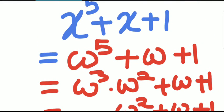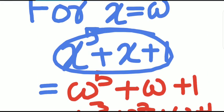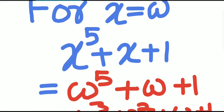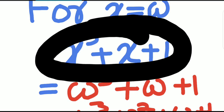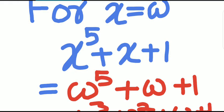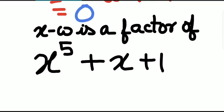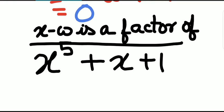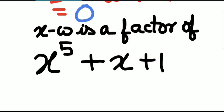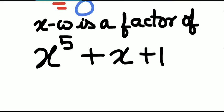So we see that x minus ω is a factor of this expression. Now, x minus ω is a factor. But what about other factors? We think that x minus ω squared is also a factor, since the complex roots occur in conjugate pairs — the conjugate of ω being ω squared — so x minus ω squared should also be a factor.